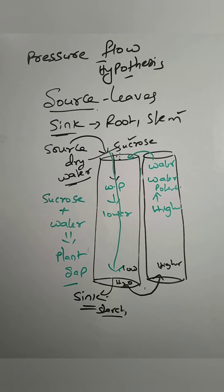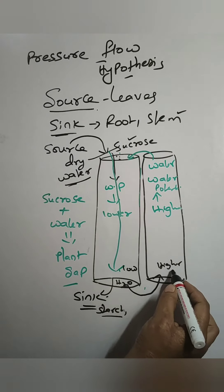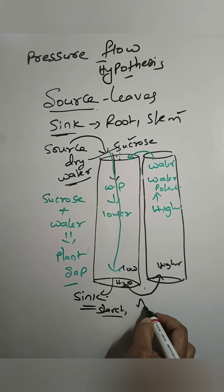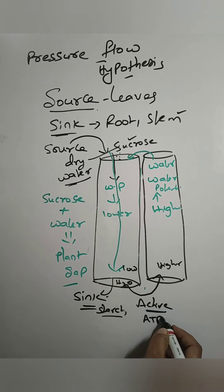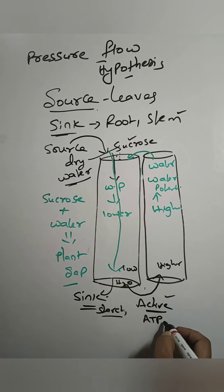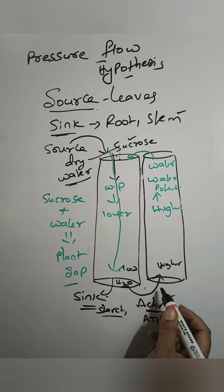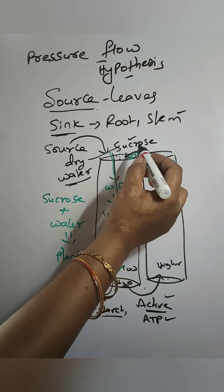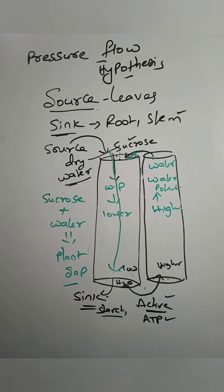Water at the sink has lower concentration while xylem has higher concentration. Normally osmosis moves water from high to low, but here water moves from low concentration back to high concentration — this is called active transport, which requires ATP and energy. So the water moves back to the xylem via active transport, while the initial movement was passive transport from high to low without energy. In this process, both active and passive transport mechanisms are involved. This concludes the pressure flow hypothesis.